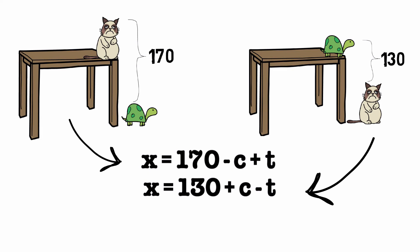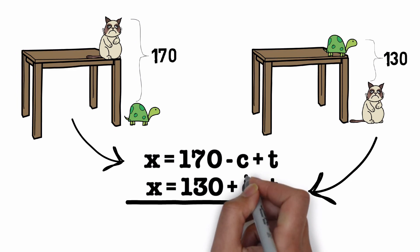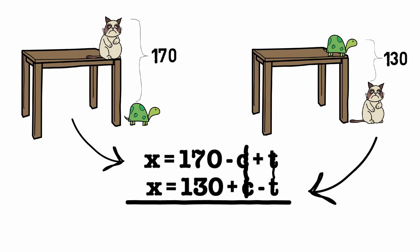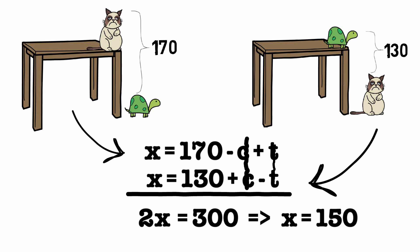So we can say X plus X is equal to 170 minus C plus T plus 130 minus T plus C, and now something very interesting happens. The T's and C's cancel out. So we get 2X is equal to 300, or X is equal to 150. So the height of our table is 150.